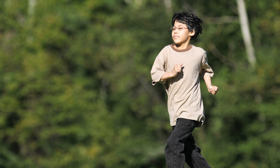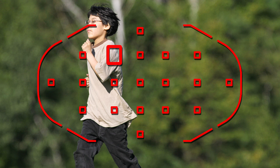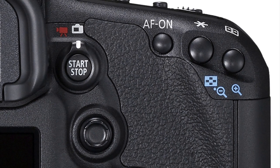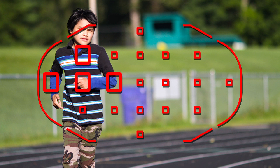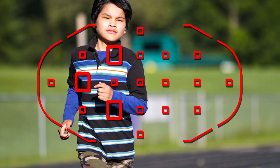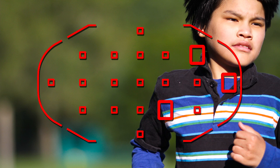In AI Servo AF, automatic AF point selection no longer has to start in the center. Just press the AF point selector button on the back of the camera and dial in any AF point you like to begin tracking your subject. As long as you're in automatic AF point selection, if the subject moves away from your starting point, the viewfinder will indicate the updated AF point being used to track your subject.